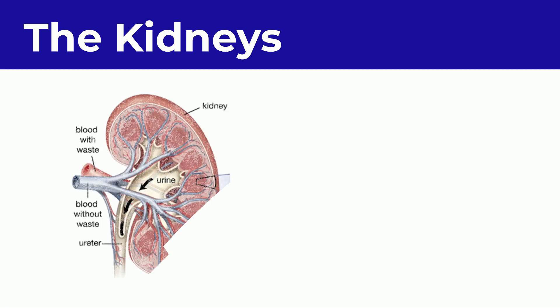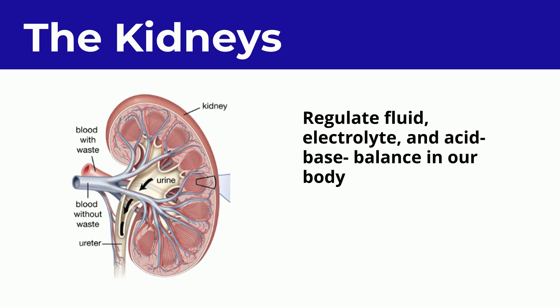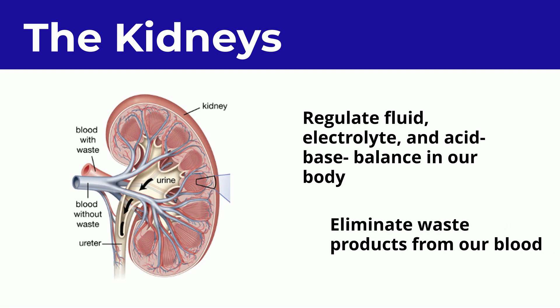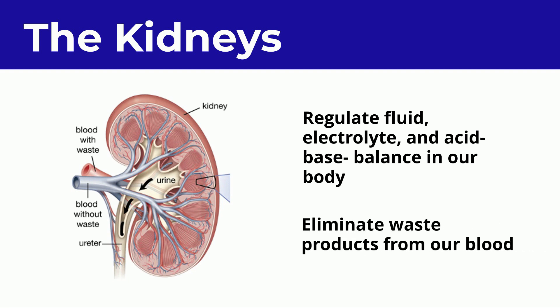The kidneys are vital organs that regulate fluid, electrolyte, and acid-base balance in our bodies. It is in the kidneys that blood is filtered of all waste, and this waste is excreted as urine.